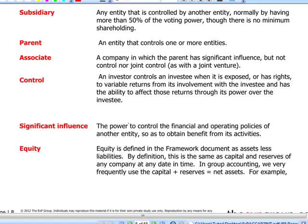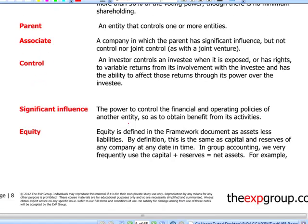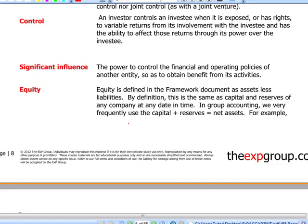Significant influence is the power to actually influence the financial and operating policies of another entity in order to obtain benefits from it. Equity — which should be fairly familiar from the conceptual framework definition — in group accounting we will take a shortcut and define equity as the net assets of the subsidiary, meaning capital and reserves at the acquisition and reporting date. That is pretty important in group accounting.